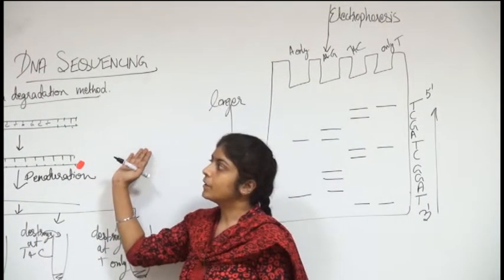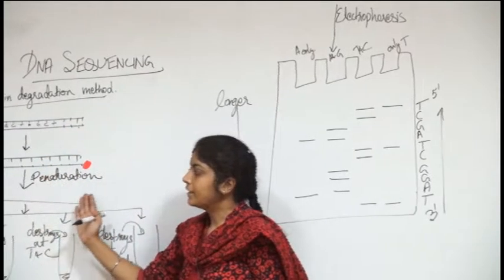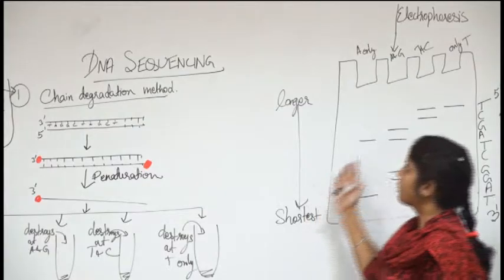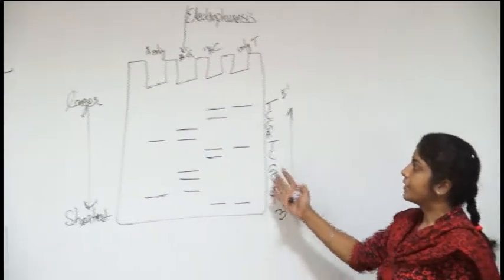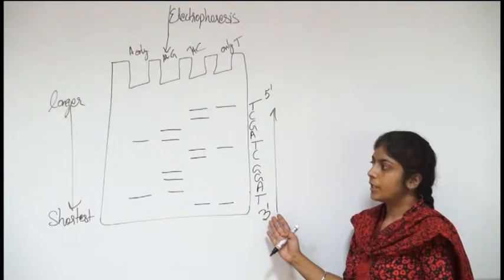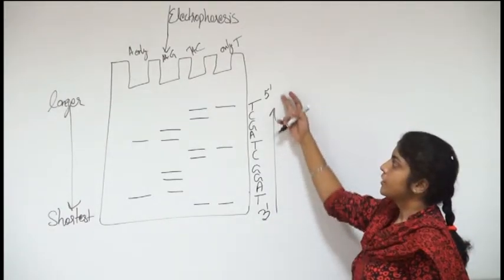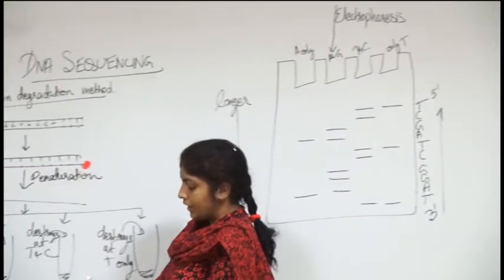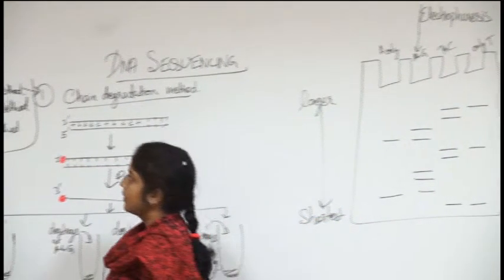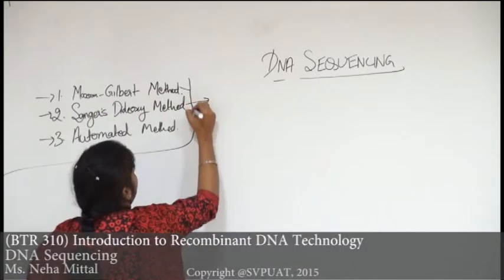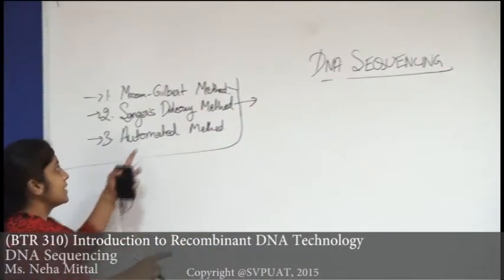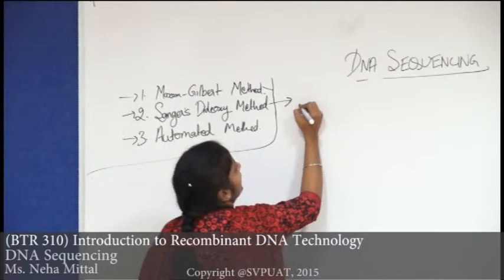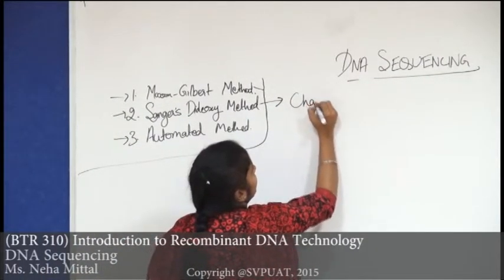This was the Maxim Gilbert method, in which we degrade the chain with different chemicals and after electrophoresis we get the bands; depending on which end was labeled we read and sequence the gel. The second and most commonly used method nowadays is Sanger's Dideoxy method, also called the chain termination method.